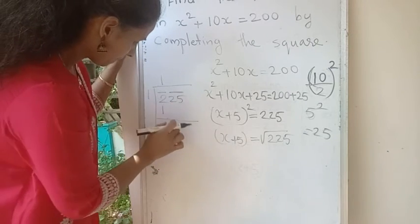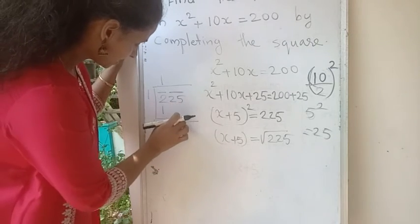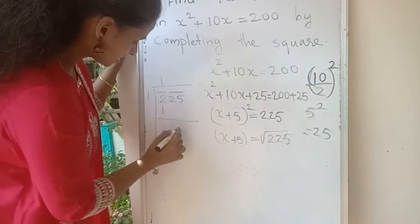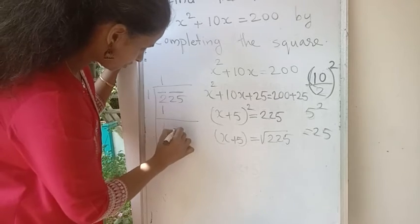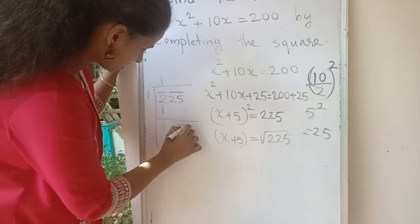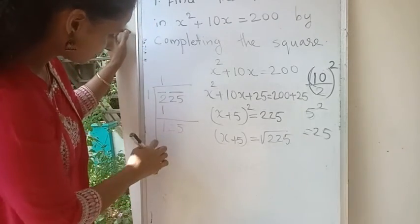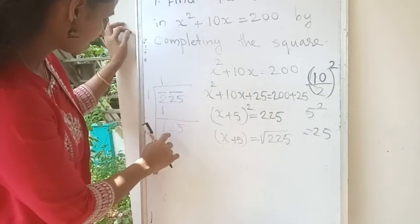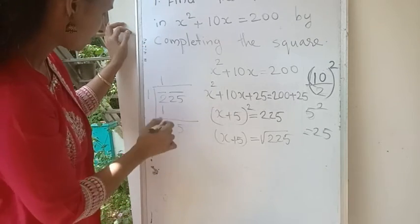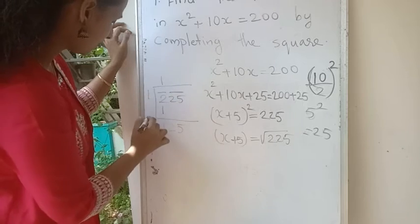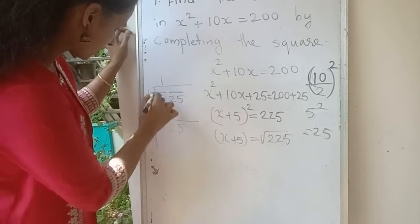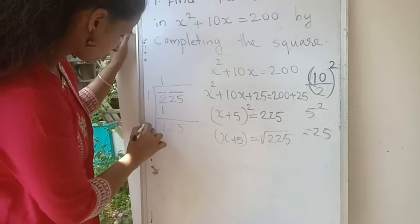We bring this pair of numbers — 25 — downwards, then we get 125. We have to take the double of this number: 1 plus 1 is 2.